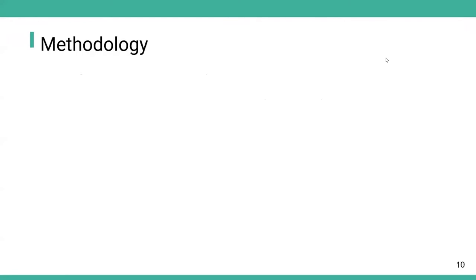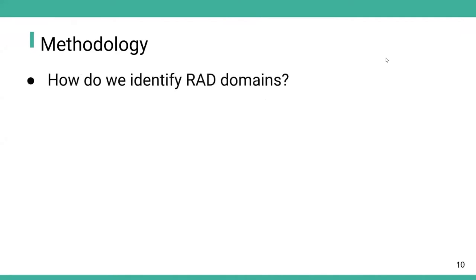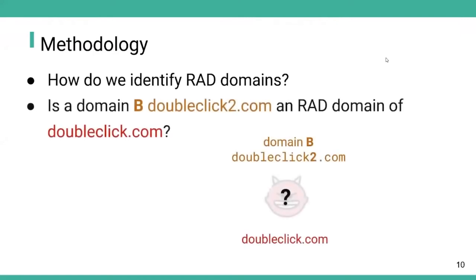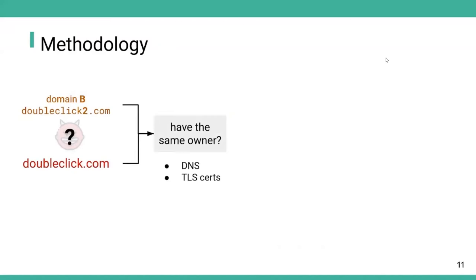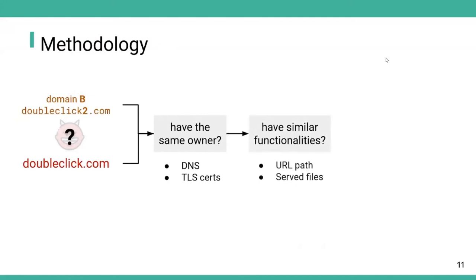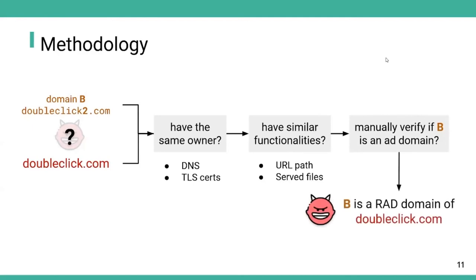Next, I will introduce the methodology. How do we identify red domains? Using doubleclick.com as an example, the question becomes: is domain B, doubleclick2.com, a red domain of the ad domain doubleclick.com? We go through three steps. First, we check if both domains have the same owner, leveraging DNS records and TLS certificates to infer ownership. Second, we check whether the two domains have similar functionalities using URL paths and served files. Third, we manually verify if domain B is an ad domain by following filter list policy. If all three conditions are satisfied, we infer B is a red domain of doubleclick.com.